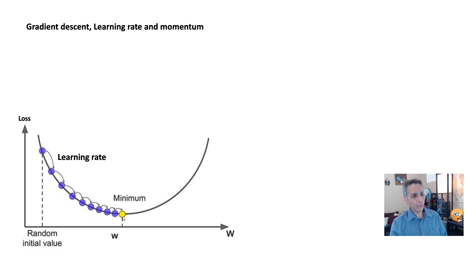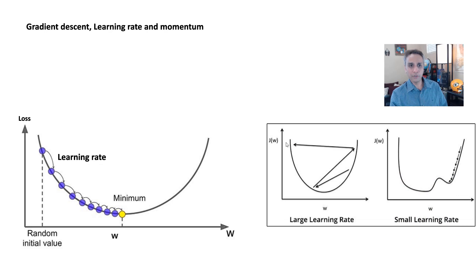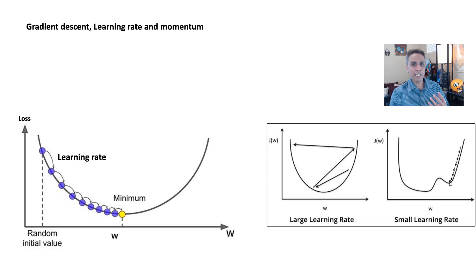How do you get there? If you're right here you want to take a step in the right direction, then another step. If these steps are too large you may miss the global minimum — you'll go from here to there and never find it. If the steps are too small, as shown in this example, you will find the minimum but it will take a long time.